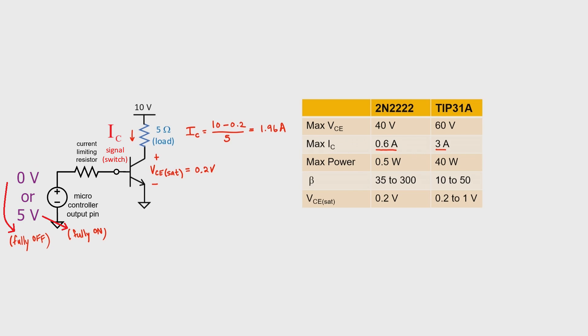How about for the base current though? The base current is just the collector current divided by beta. If we used a beta of 100, I would get 19.6 milliamps, which ought to be okay for most microcontrollers.